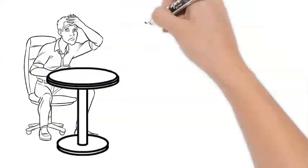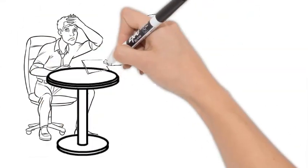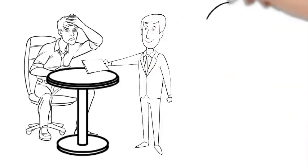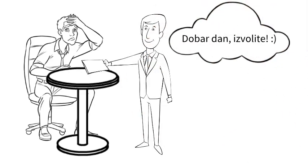When you enter a restaurant, the waiter will come and say something like 'Dobar dan, izvolite.' Dobar dan, izvolite means 'hello, welcome,' and they will give you the menu. You probably already know some of these, but let's see what are the usual things you can find on a menu in Serbia.